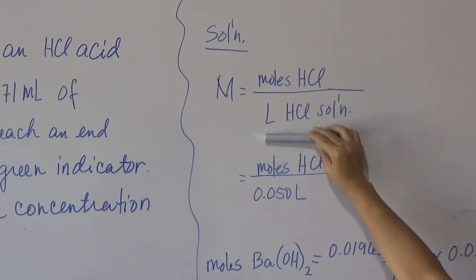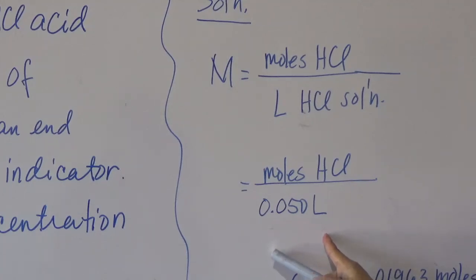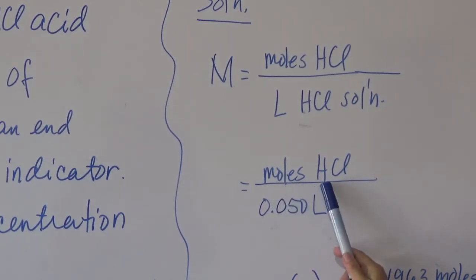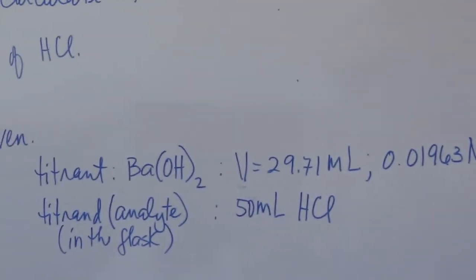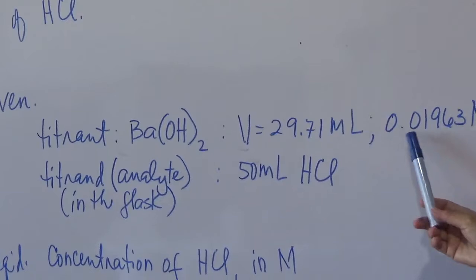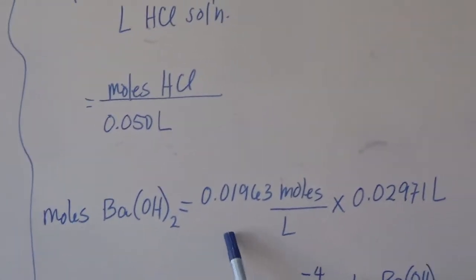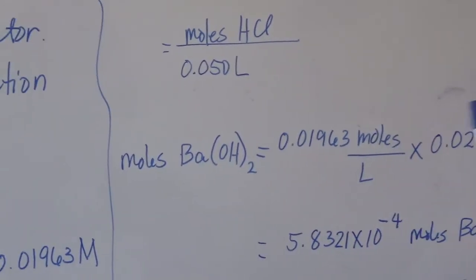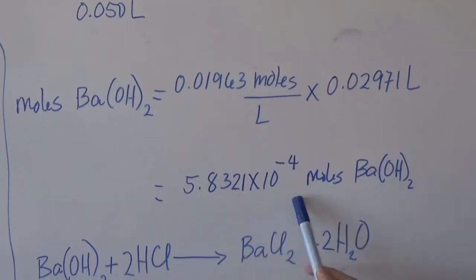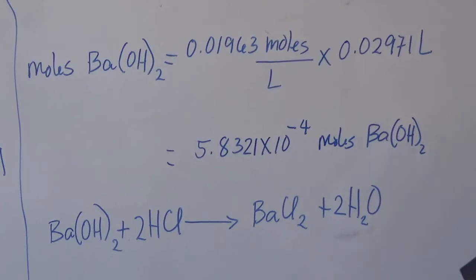The volume of hydrochloric acid solution is 50 ml, equivalent to 0.05 liters. Our objective is to determine how many moles of hydrochloric acid reacted with the barium hydroxide. From the given volume and concentration of the titrant, we determine the moles of barium hydroxide: 0.01963 mol/L times the volume in liters gives 5.8321 × 10⁻⁴ moles of barium hydroxide.